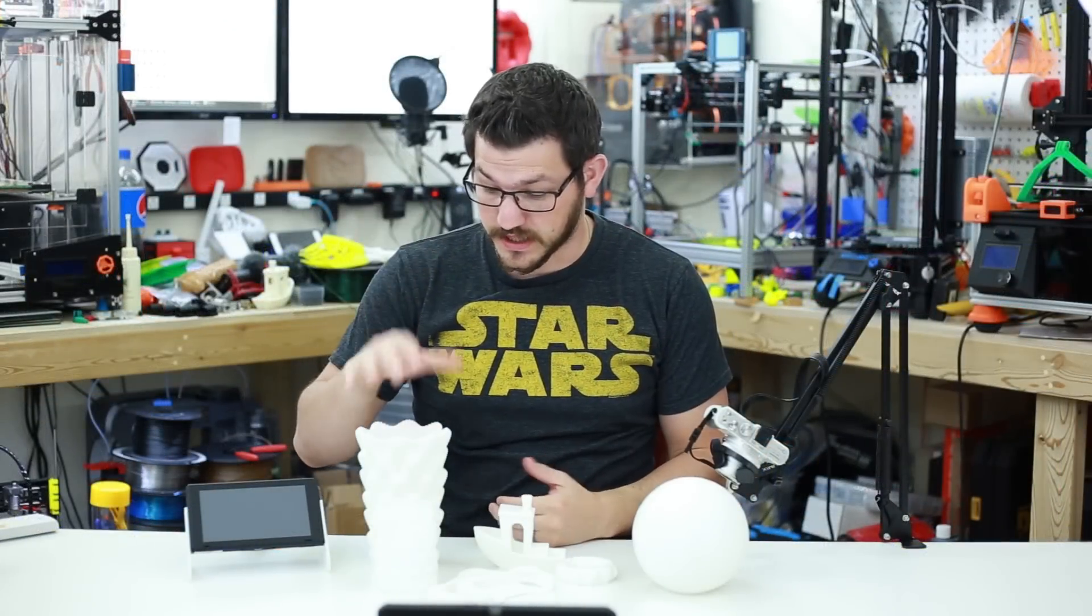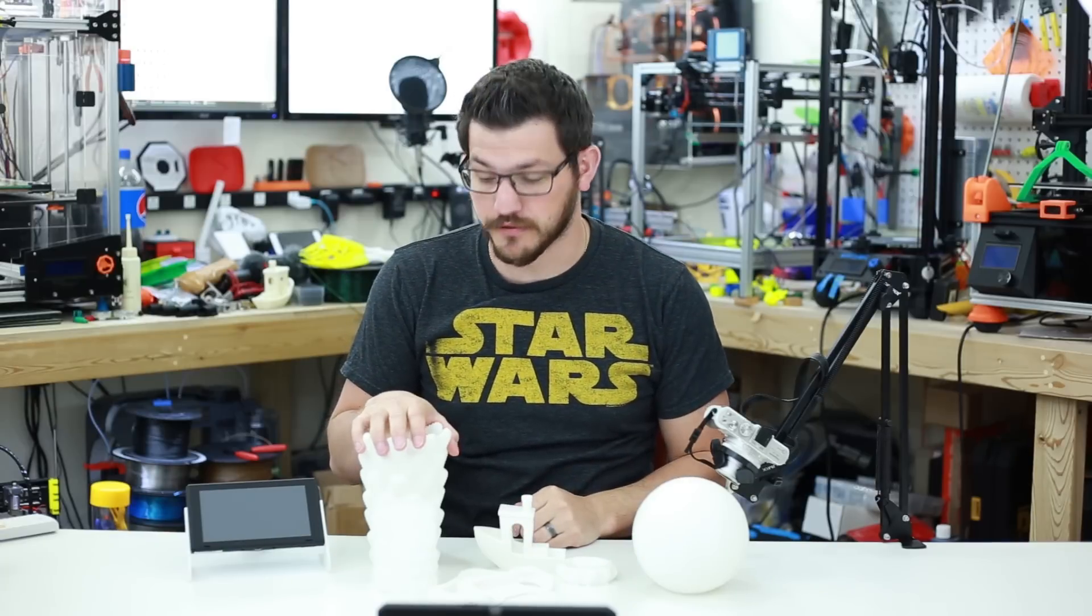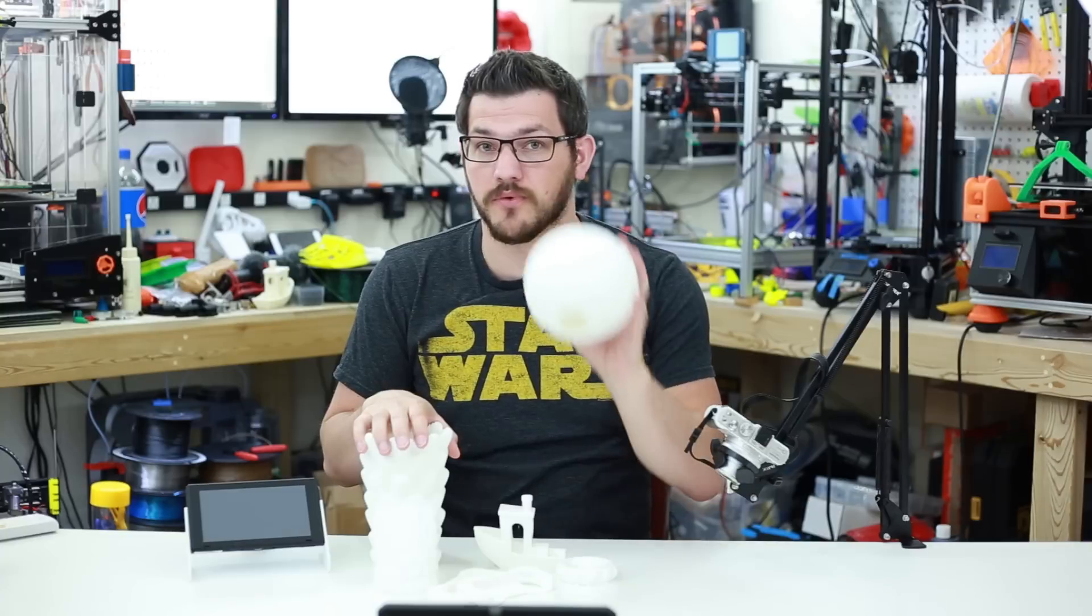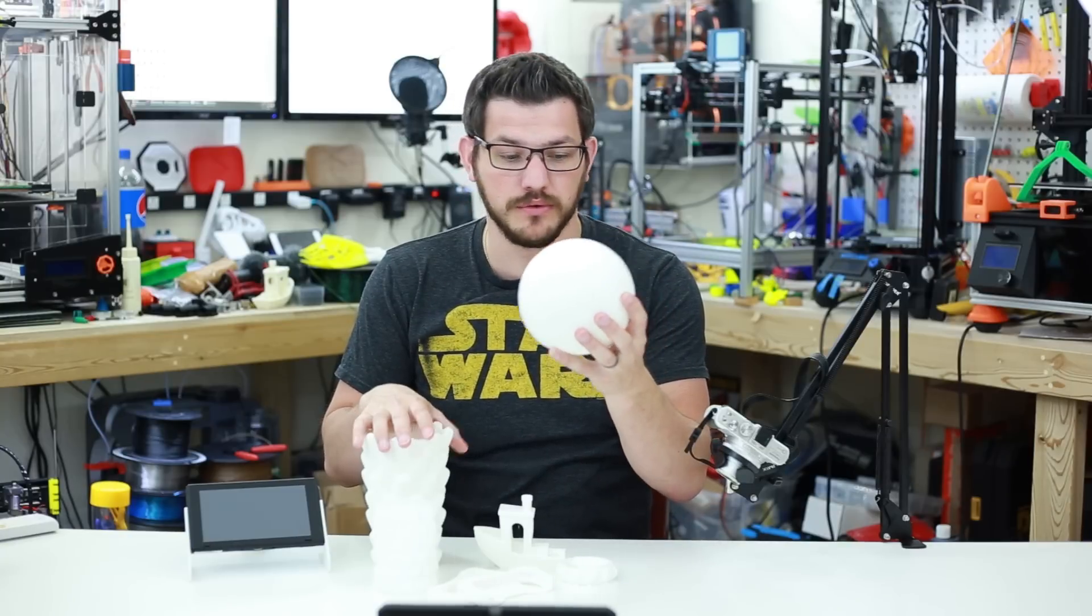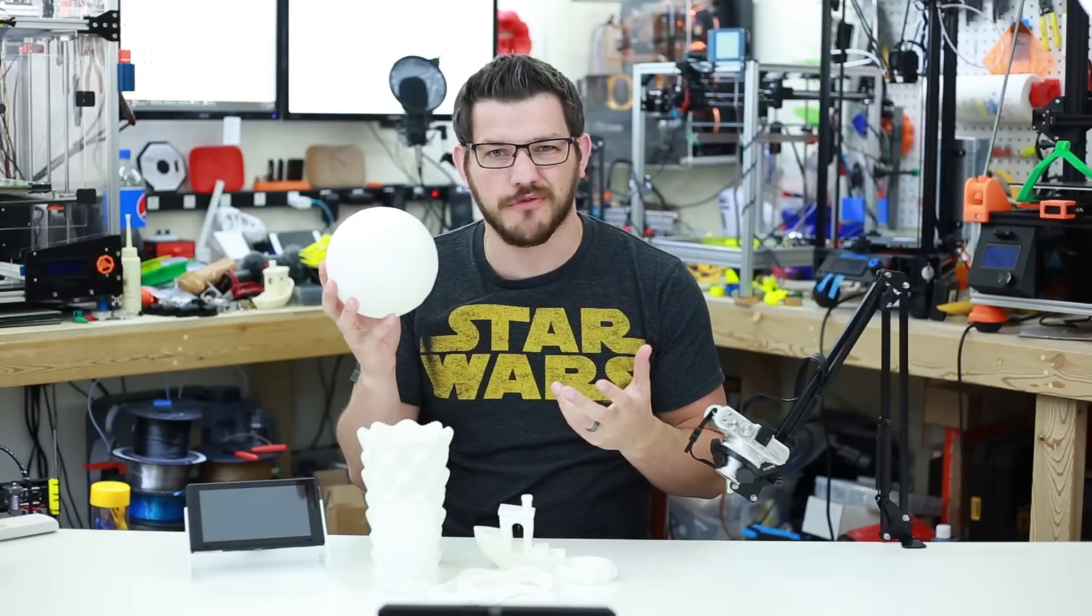All the prints are done. I printed all of this on the Anycubic i3 Mega I have sitting over there on my shelf and they came out really, really well for everything except for this moon globe. I've never tried printing this before. It's kind of lithophane basically.